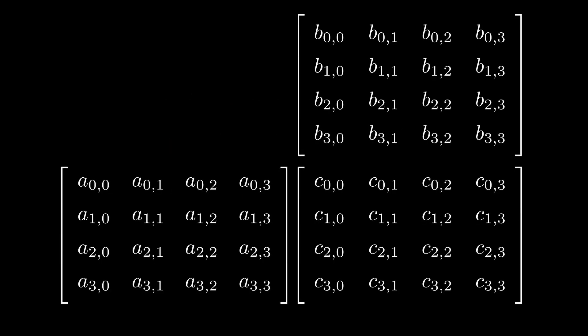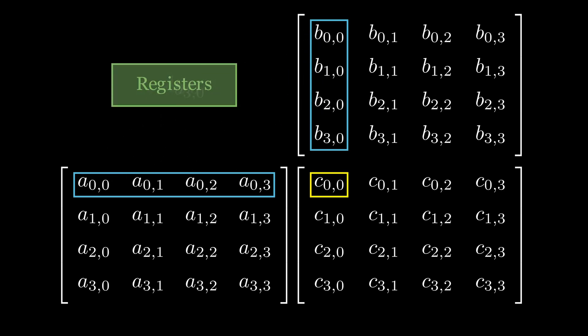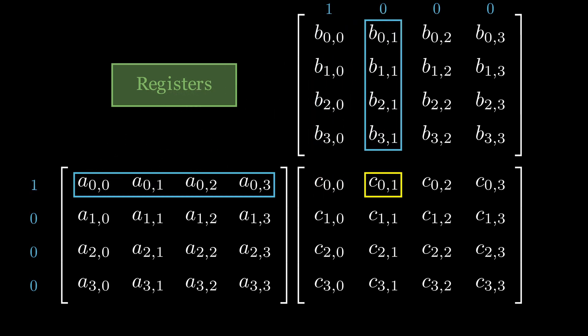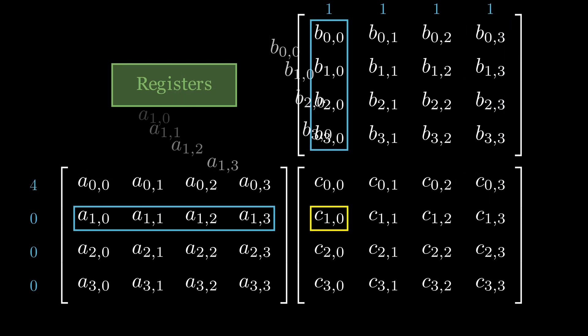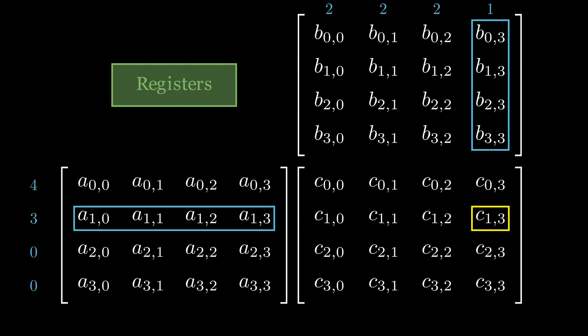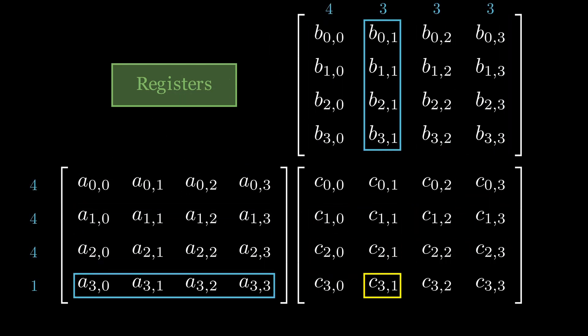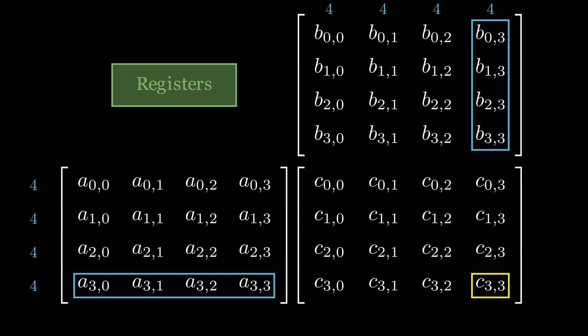Let's look at how is memory accessed in our kernel. The first thread takes the first row of matrix A and the first column of matrix B and loads them into the registers. If we were to start keeping track of how many times was each row and each column accessed, we can clearly see that we are actually reading them multiple times. And more precisely, the number of accesses is equal to the length of the side of our matrix.